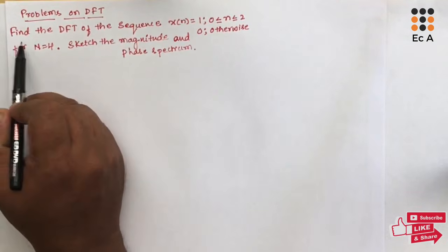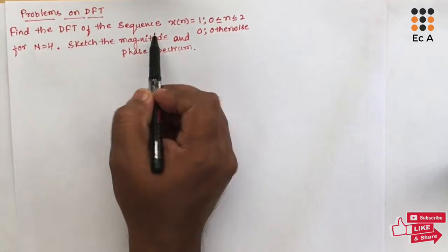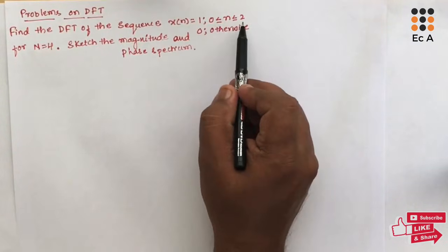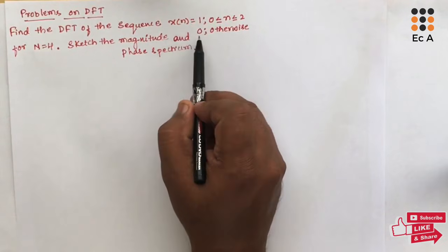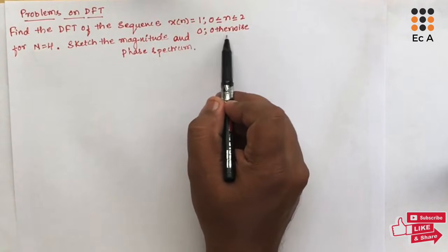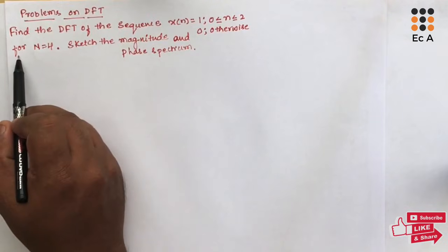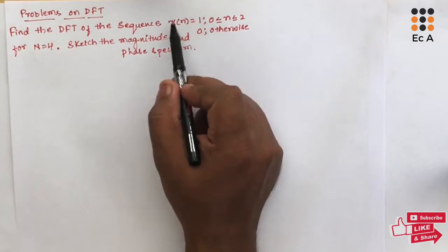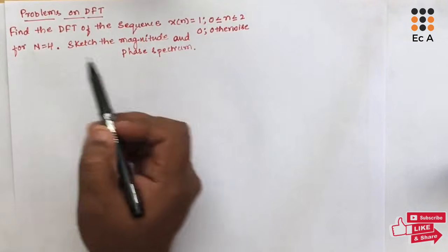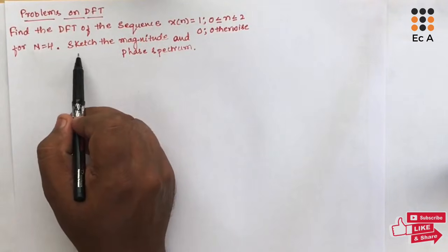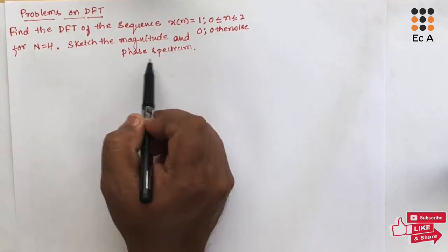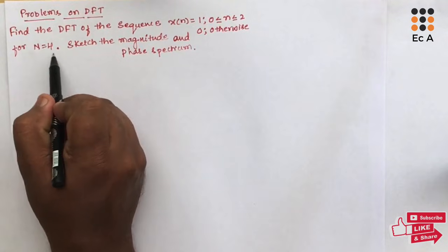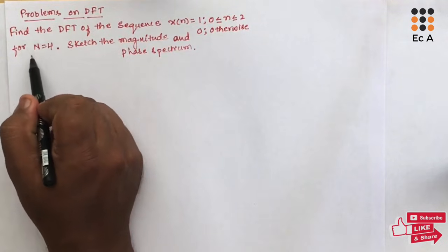Here, we need to find the DFT of the sequence x[n] = 1 for n ranging between 0 to 2, and x[n] = 0 for other values of n, for N = 4. So, here they have asked N = 4, which means we need to find the 4-point DFT.